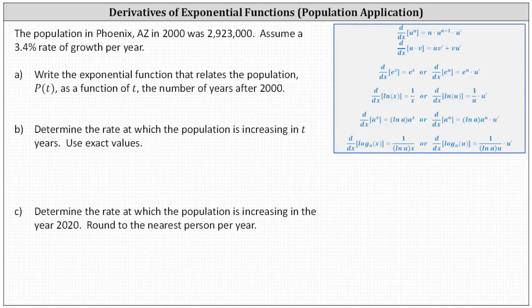write the exponential function that relates the population P of T as a function of T, the number of years after 2000. We'll go ahead and write the exponential function P of T in the form of P of T equals A, the initial or starting population, times 1 plus R raised to the power of T, where R is the annual growth rate expressed as a decimal, and T is the time in years, in this case, after the year 2000.